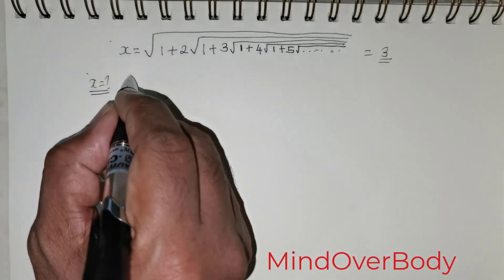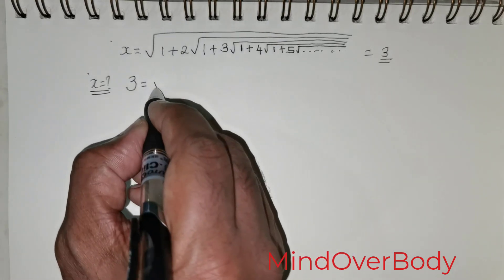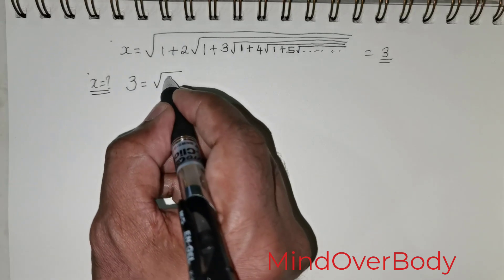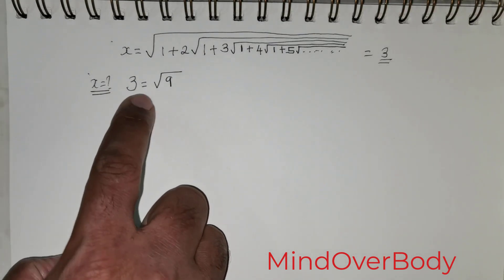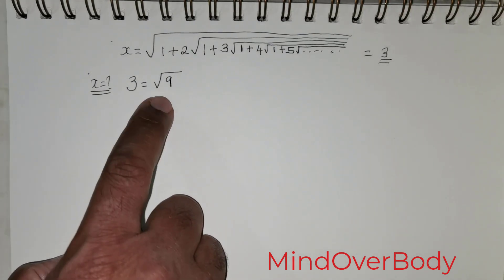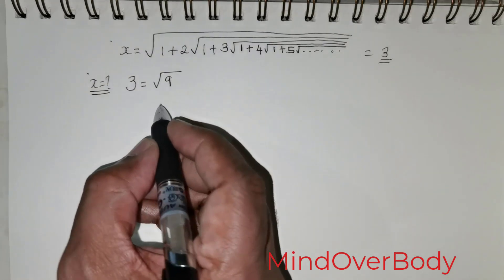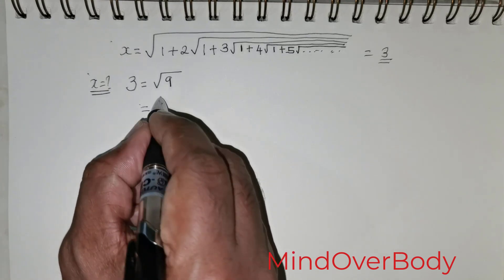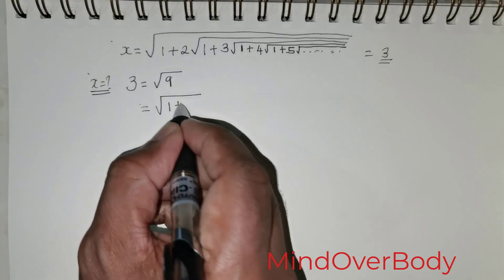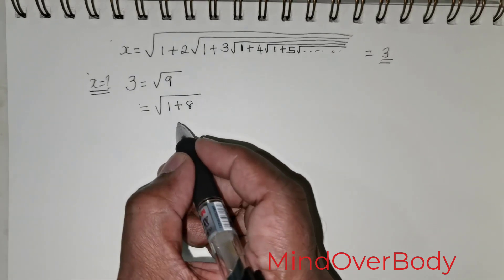According to the claim the value is going to be 3. Let us start off with 3. We all know the value of 3 can be obtained by taking the square root of 9 — root of 9 gives 3, considering only the positive side. Now I can write 9 as 1 + 8, trying to produce this pattern.